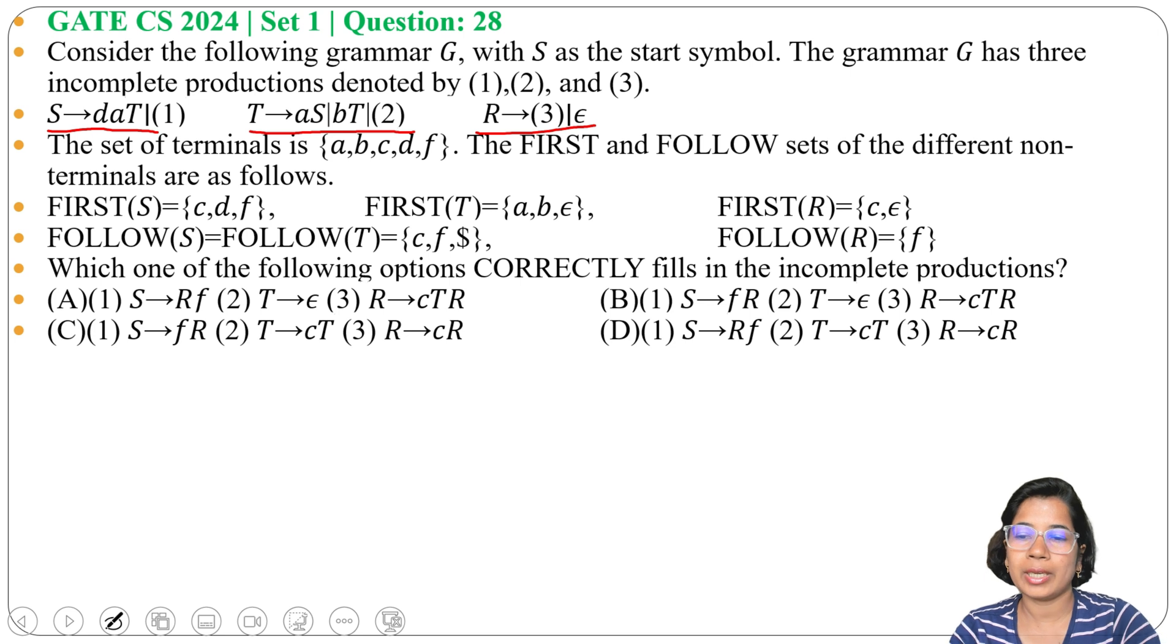And find first and follow. If the first and follow match with this first and follow, then these are the productions.